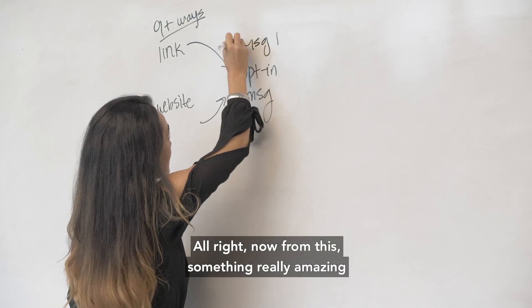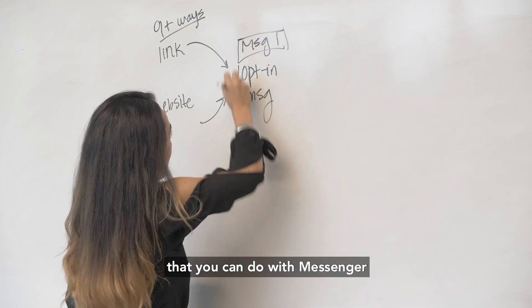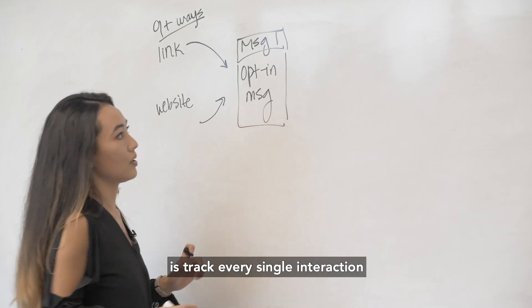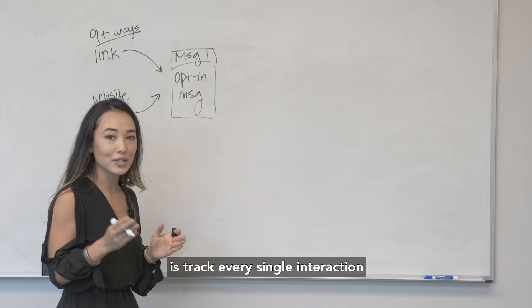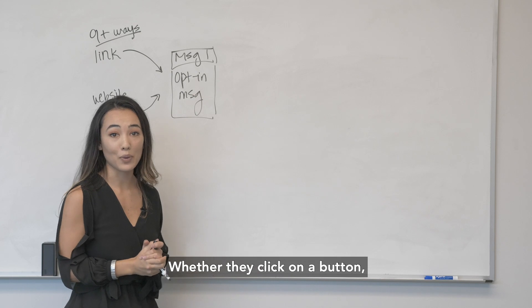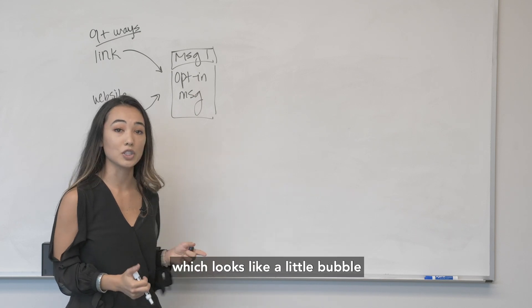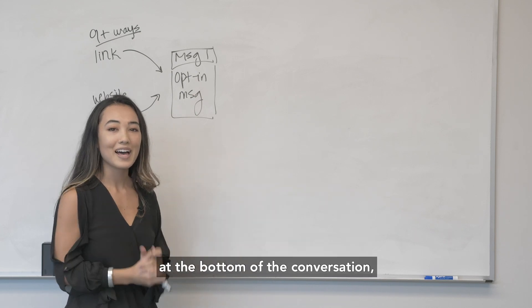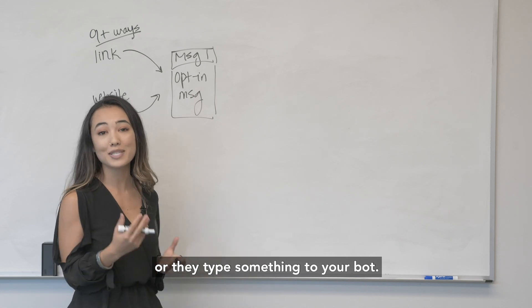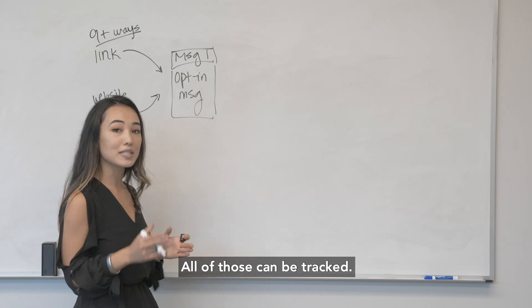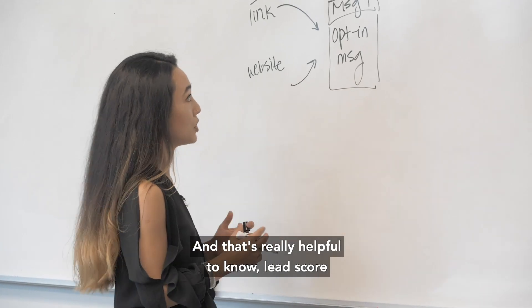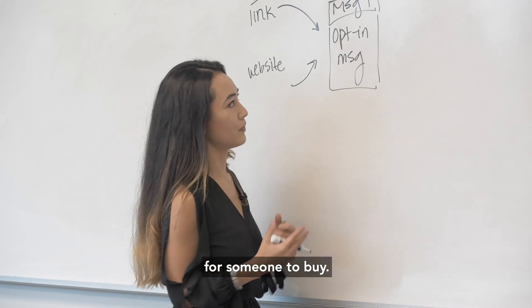Now from this, something really amazing that you can do with Messenger is track every single interaction that someone has with your bot. Whether they click on a button, they click on something called a quick reply which looks like a little bubble at the bottom of the conversation, or they type something to your bot. All of those can be tracked and that's really helpful to know lead score and how many touch points it took for someone to buy.